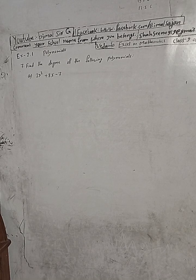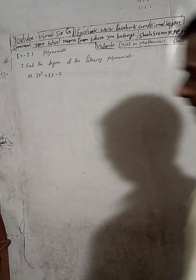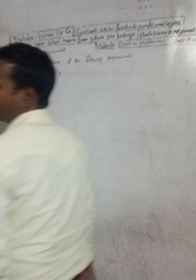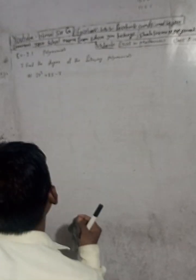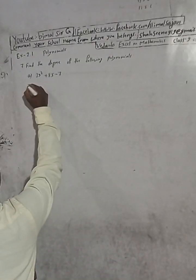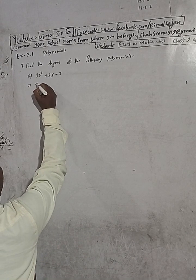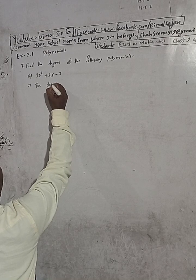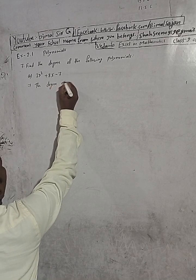The question is here, number 7: find the degree of the following polynomials. Here we have to find the degree, so we can write here the degree of the following polynomial.